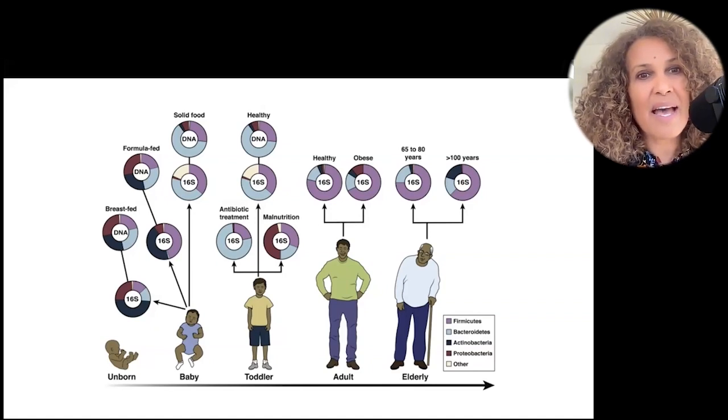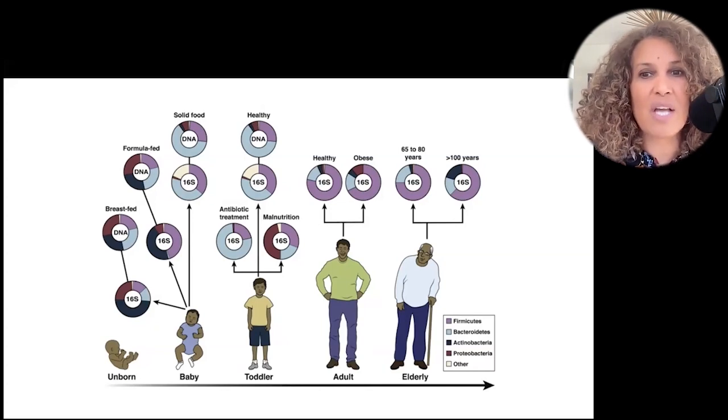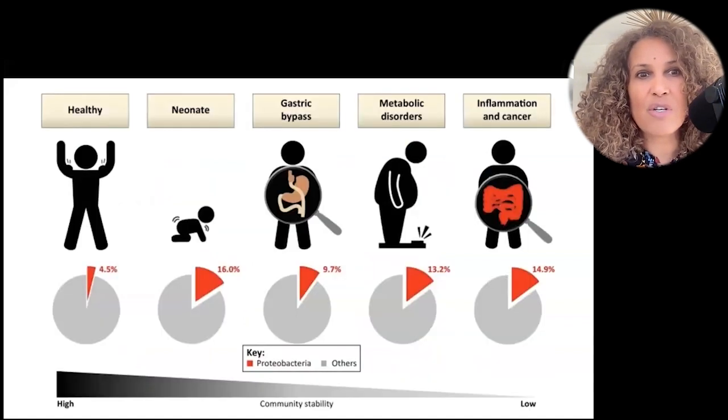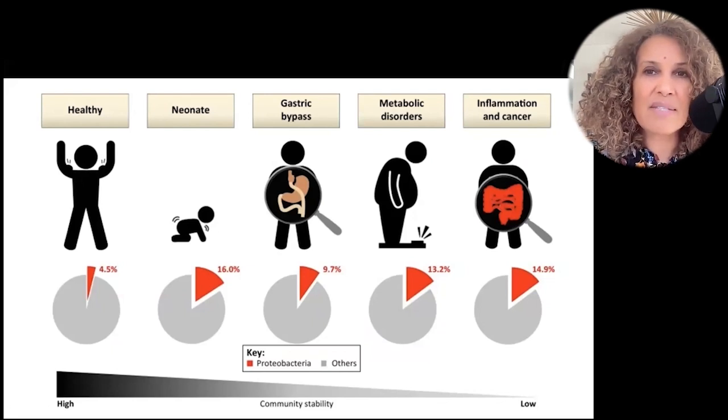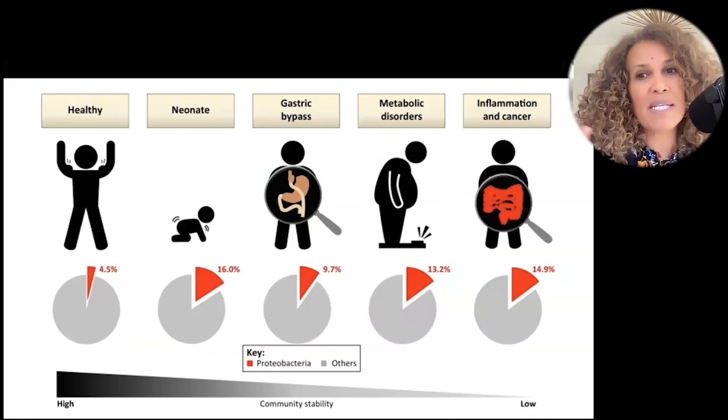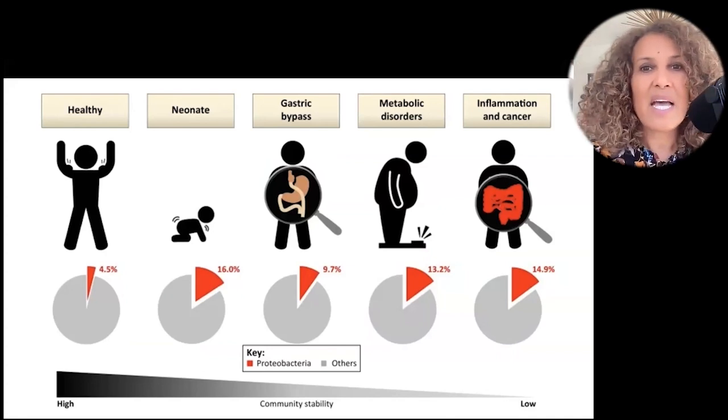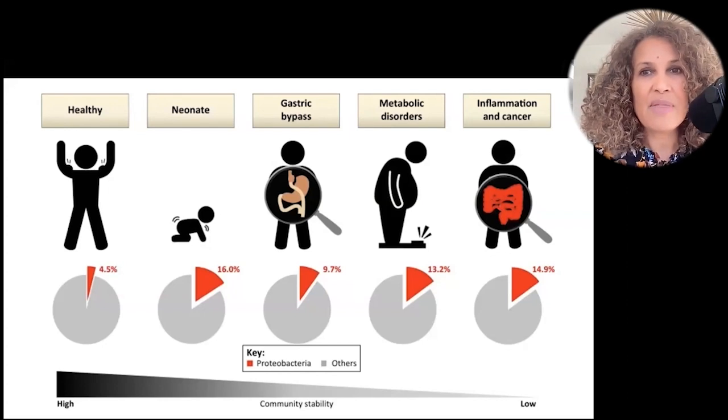And what you'll see is that whether you're breastfed or formula fed, that changes the composition, antibiotic treatment changes the composition, malnutrition changes the composition, obesity changes the composition. And as we get a bit older, that changes it too. And really what we see here is that these disease states, including gastric bypass surgery, any kind of bariatric surgery, metabolic disorders, heart disease, diabetes, stroke, inflammation, and cancer, they're all associated with changes in the microbiome. And what is represented here in that little pizza pie slice is proteobacteria. And it's an over-representation of proteobacteria in these conditions.